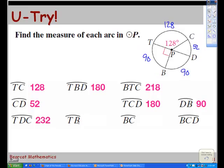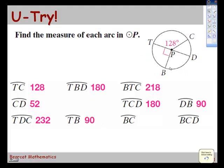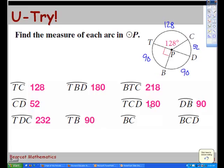And three more here. Arc TB. I found that a long time ago. That's 90. That's given in a central angle. Arc BC. How'd you get that? Arc BC includes arc BD, which is 90, and arc DC, which is 52. So if we just add them together, we get 142.